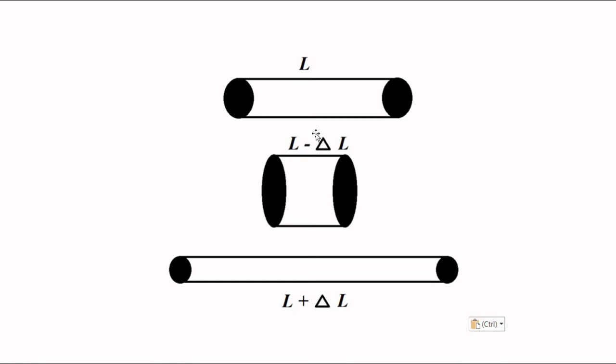...it undergoes compression or expansion. When it undergoes compression, its length decreases and cross-sectional area increases. When it is expanded, its length increases and its cross-sectional area decreases. We have to measure this change in length, delta L per unit original length (delta L by L), with the help of piezoelectric transducers.